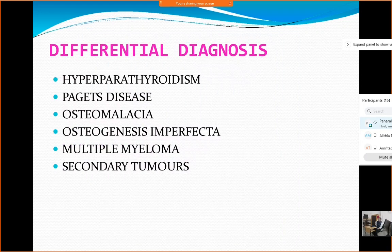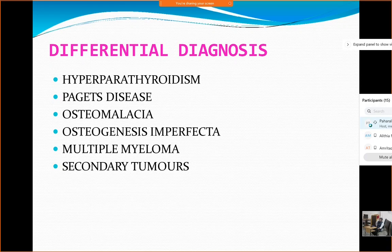As far as differential diagnosis is concerned, we need to rule out hyperparathyroidism, Paget's disease, osteomalacia, osteogenesis imperfecta, multiple myeloma, and secondary tumors. All the secondary causes of osteoporosis may also come in the differential diagnosis, and you may need to rule them out based on the patient's presentation.